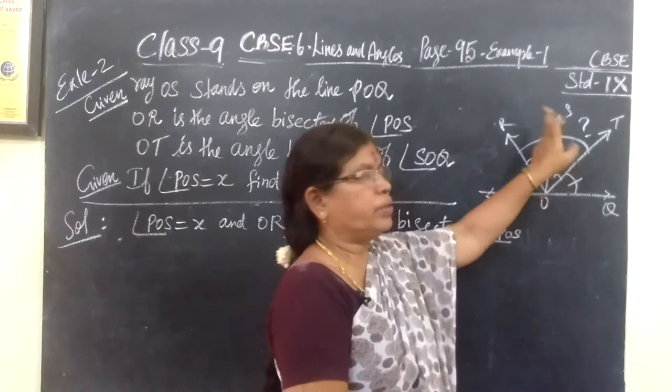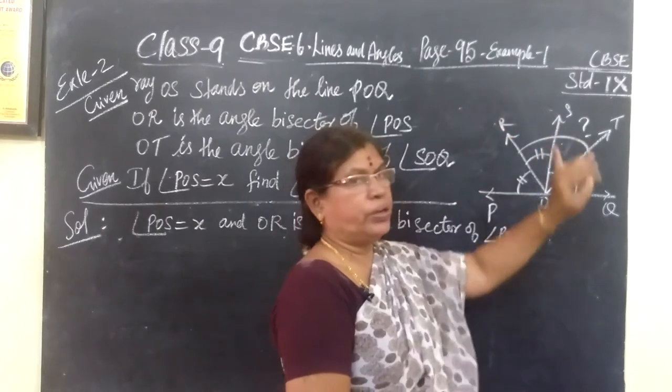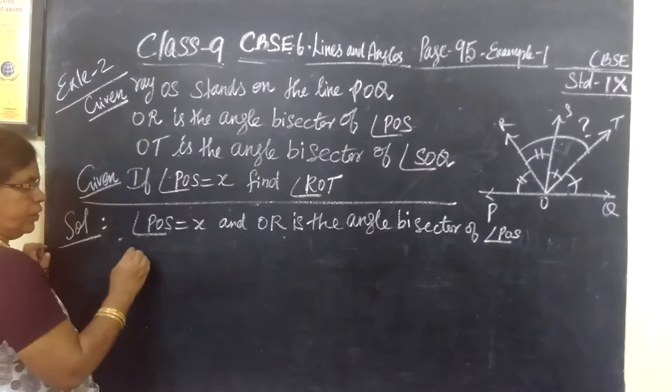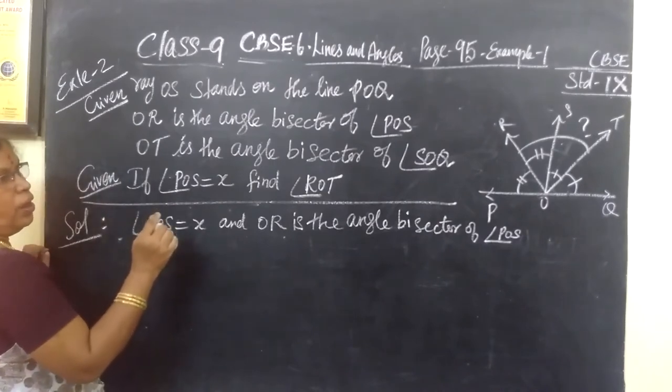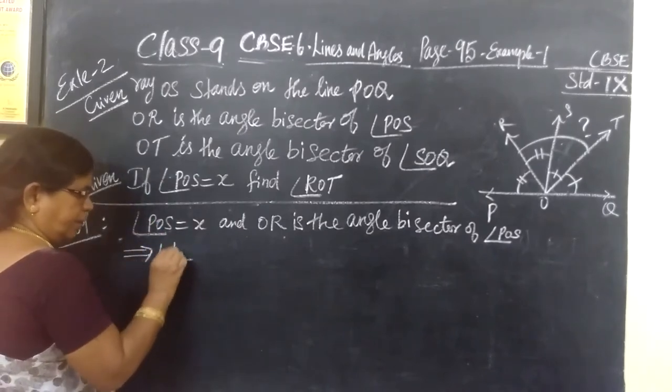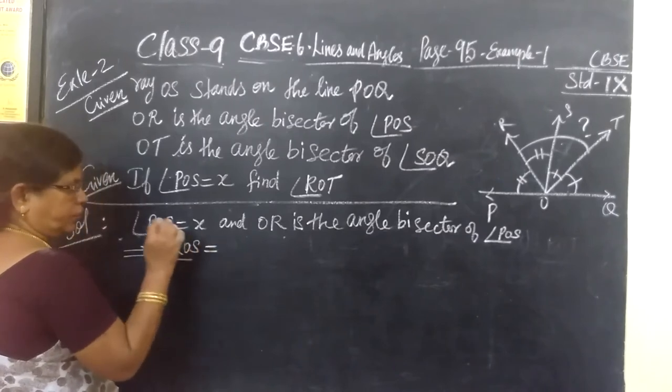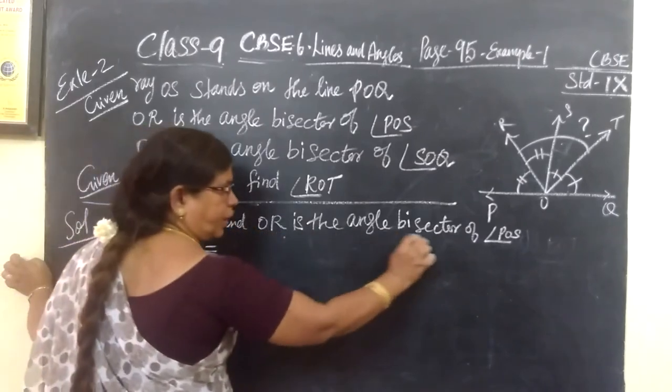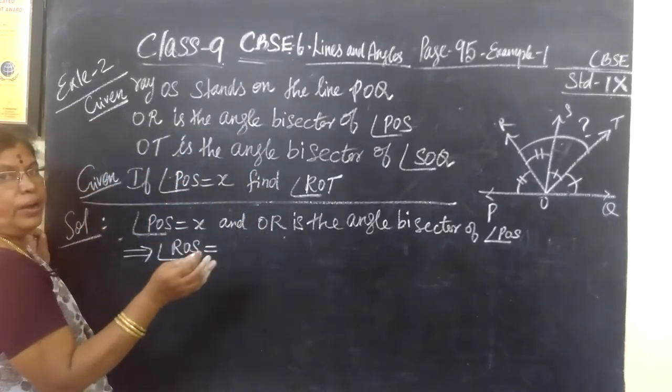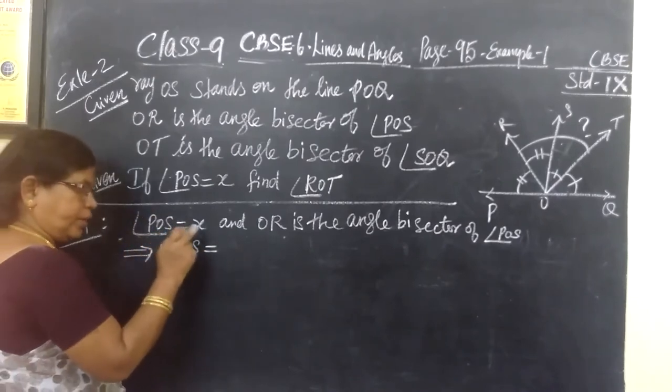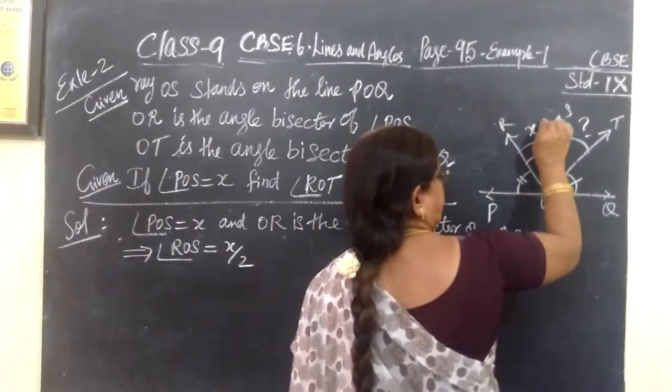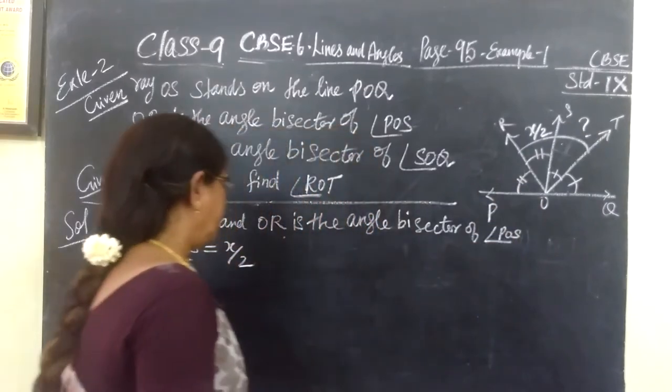So if we add these two angles we get it. First of all we need ROS. And what is given? You are given POS equal to X. So which implies ROS equal to X by 2. Angle ROS equals, POS is X and OR is the angle bisector. Angle bisector means it divides the full angle into equal parts. So POS is X means ROS equal to X by 2. So this angle we have found, this is X by 2. And this only we need now. This is the first part.